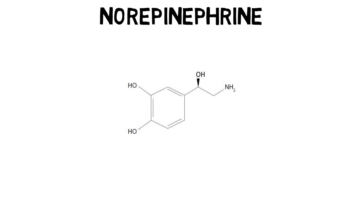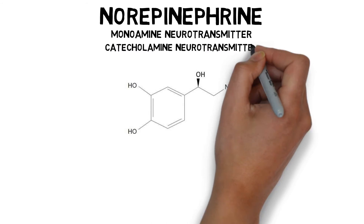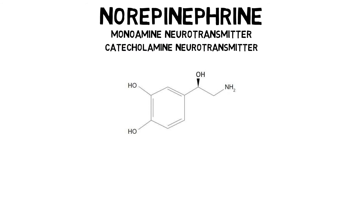Norepinephrine, also known as noradrenaline, is a monoamine neurotransmitter, a term that refers to its chemical structure and the fact that it's derived from an amino acid. It is also a catecholamine, a term that again refers to its chemical structure and the fact that it contains a catechol nucleus.